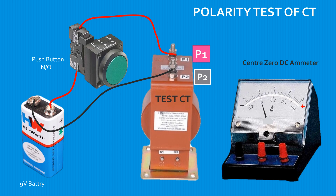Assume the S1 and S2 terminals of the test CT. Connect the S2 terminal of the test CT to the negative terminal of the center-zero analog DC ammeter.